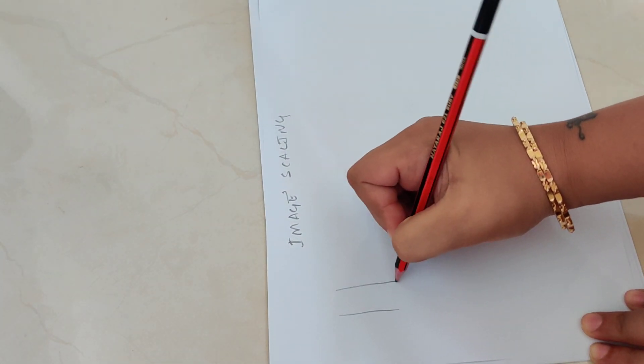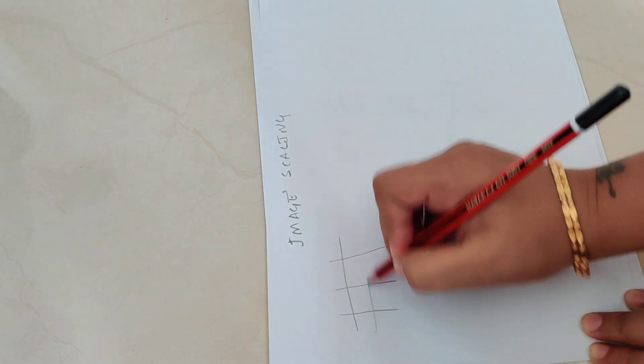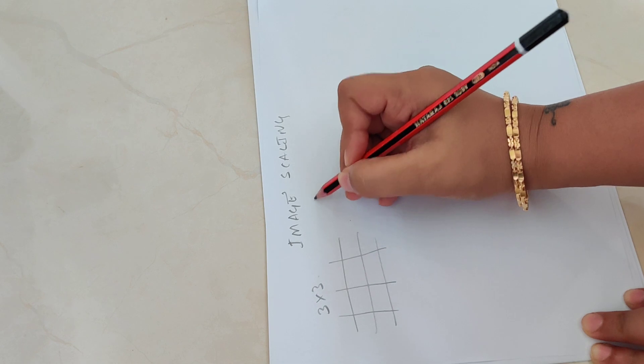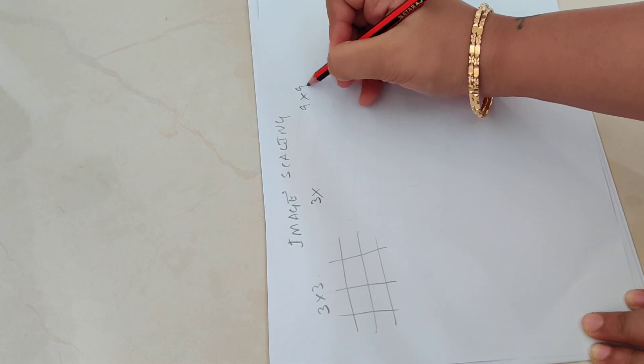Let's say you have 3 x 3 pixels which you want to scale 3 times to 9 x 9 pixels.